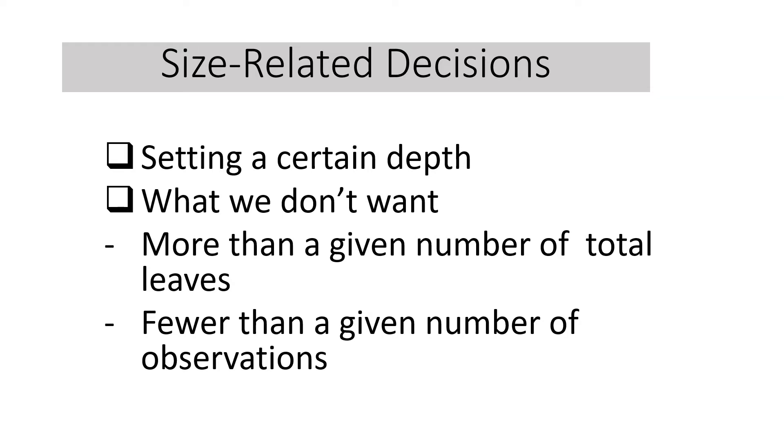So for example, when we set the number of observations to be just seven, and what we have is just six and below, then we don't want that to happen. So that means we are going to set our observations or features to be just seven and above. So that is all about size-related decisions.